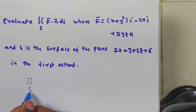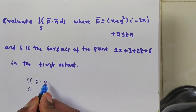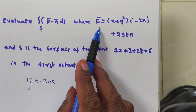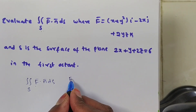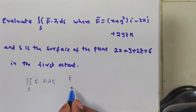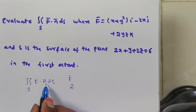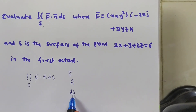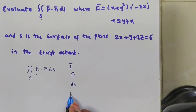We have to evaluate the double integral f̄ · n̂ dS. f̄ is given. Next, n̂ is the unit normal vector — it should be remembered it is a unit normal vector. Next we need to find dS, which is the projection on a plane — either xy, yz, or zx plane. Then we need to find limits.